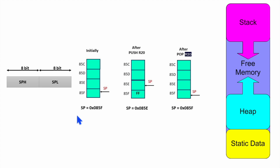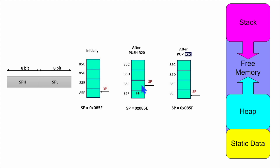After initialization, your stack pointer will hold the value 0x85F. Suppose you push data register R20 onto the stack. R20 will be loaded at the last position of the stack memory, and your stack pointer will now point to 0x85E — the next location where you can write further data. If you then pop out R20 after use, the stack pointer will increment from 0x85E back to 0x85F.